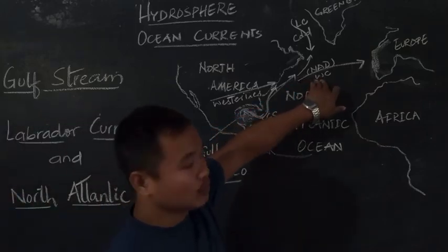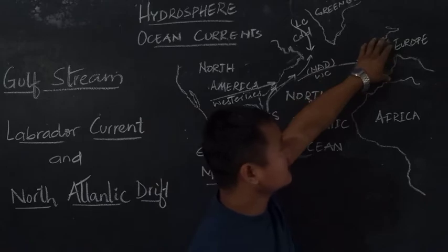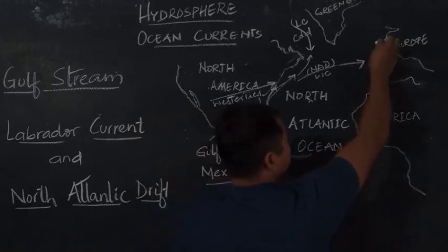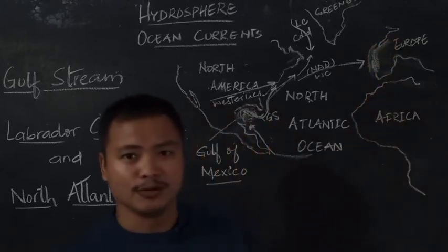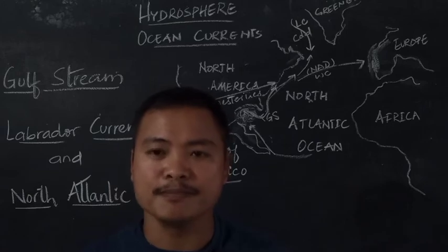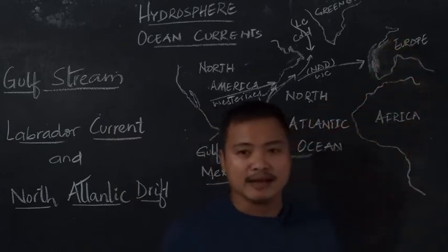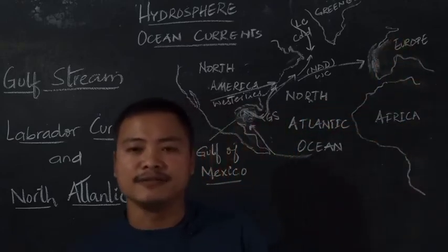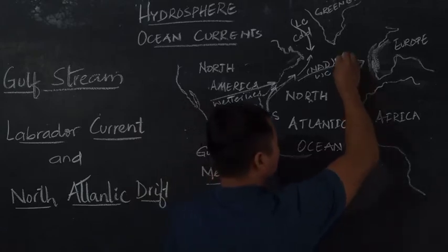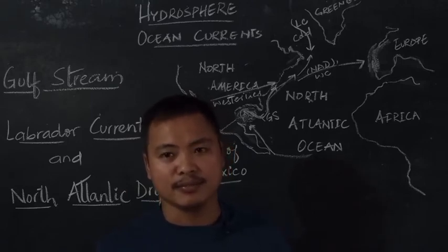The North Atlantic Drift is also a warm current. As this warm North Atlantic Drift hits the coastal areas of European landmasses, mostly the British Isles region, it increases the temperature of the water very close to the margin of the European continent and hence always keeps the ports free from ice. This is the reason why the ports around the British Isles remain active even during winters — they are free from freezing due to the North Atlantic Drift being a warm current.